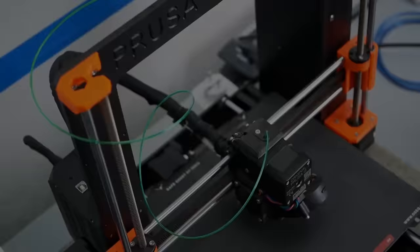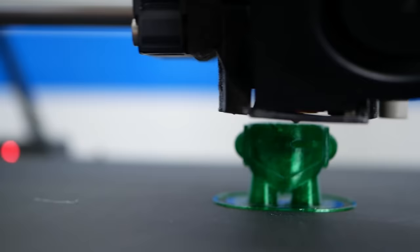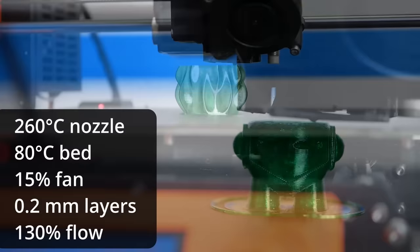So how does this oddly shaped filament print then? Way easier than I thought. I used a standard PETG profile, raised the nozzle temperature to 260 degrees Celsius and set the bed to 80 degrees Celsius while turning the cooling to only 15%.